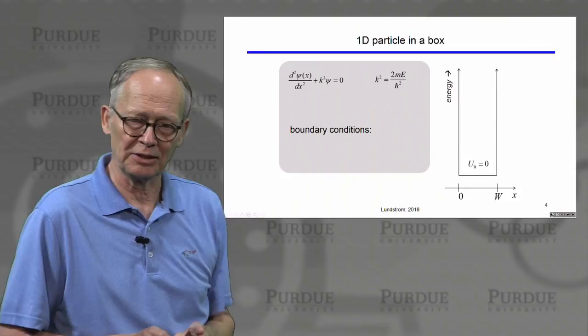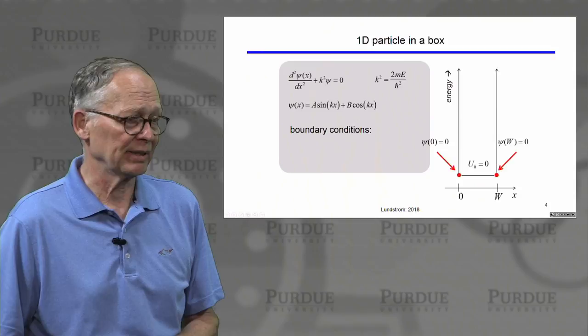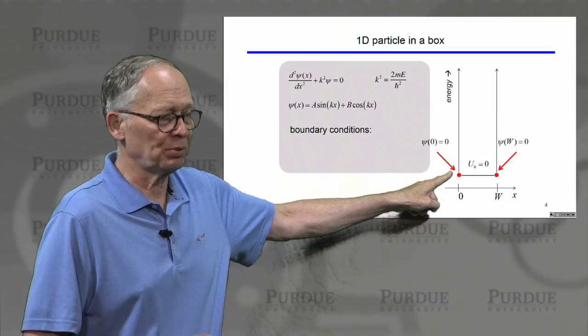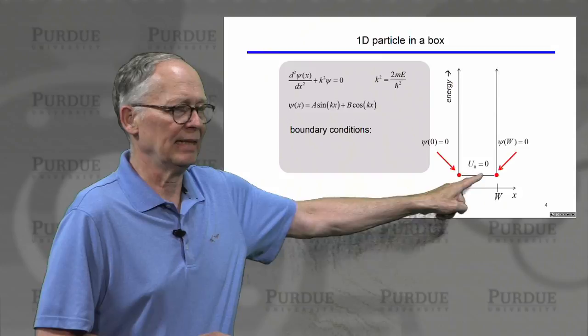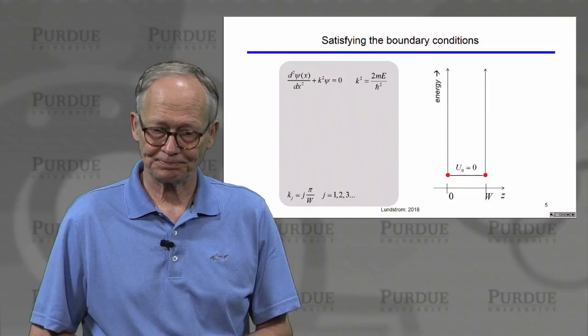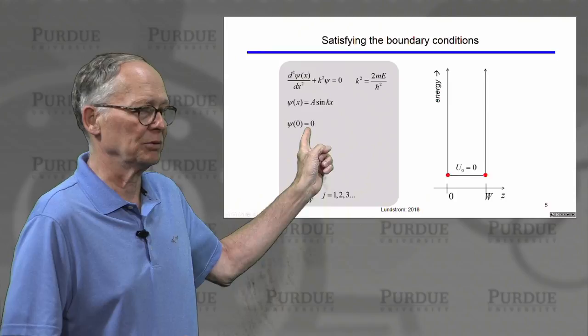It's most convenient to write the solutions in terms of sines and cosines for this problem. The electron cannot get out of the box - there's no probability it will be found at x less than zero or at x greater than W. So the appropriate boundary conditions are that the wave function has to be zero at the two ends of the box. We'll throw out the cosine kx term because the sine kx term is automatically zero when x is equal to zero, satisfying the first boundary condition.